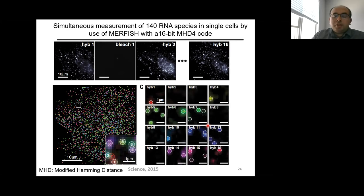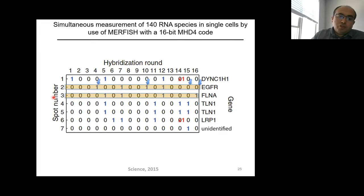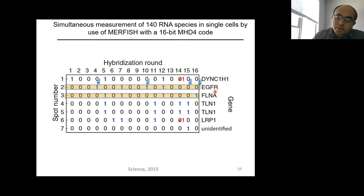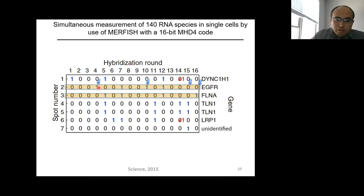A summary table shows the barcoding scheme across 16 hybridizations denoting individual RNA spots. If an RNA target is identified only by a single '1' bit and that bit has a detection problem, the gene will be missed — necessitating a barcoding correction method. MERFISH uses Hamming distance of 4: to distinguish two targets, they must differ in four bits. This is sufficient to call two genes as different RNA targets and corrects errors during experiments.